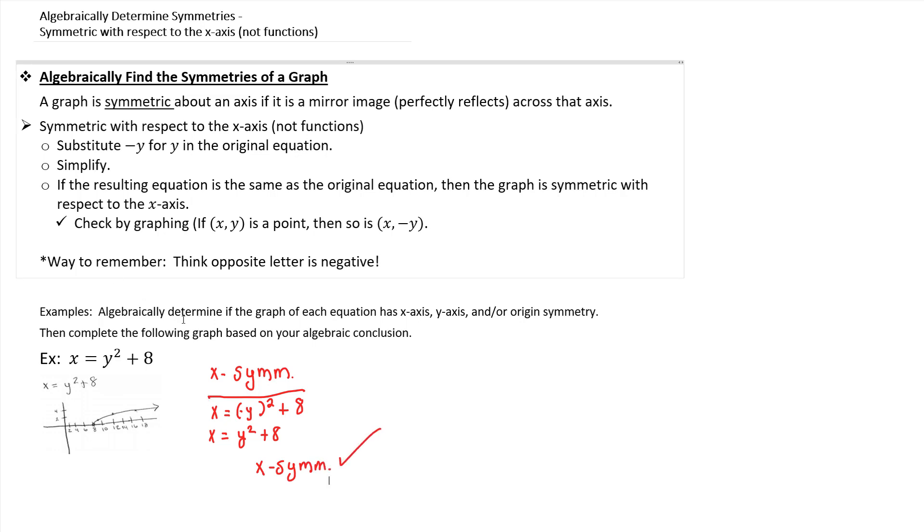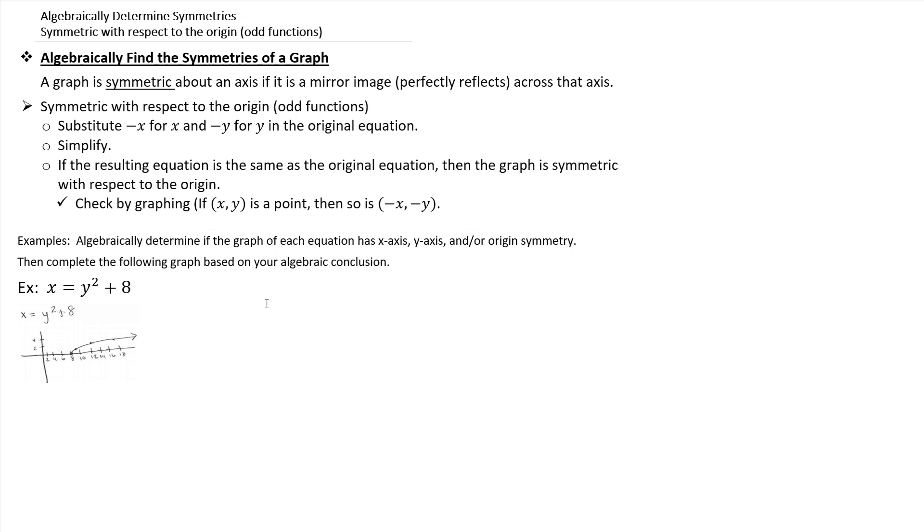Now, just for the sake of going through the process, we're going to also test origin symmetry. For origin symmetry, if you're talking on a point-by-point basis, if (x, y) is a point on the graph, then so is (-x, -y). So instead of having x, you're going to let x be negative x, and instead of having y, you're going to let y be negative y. You're going to let both happen.